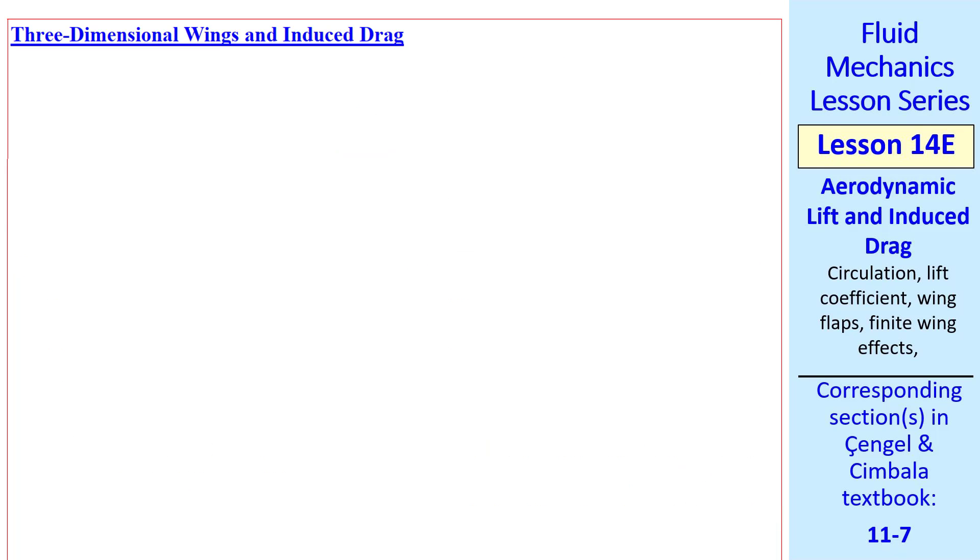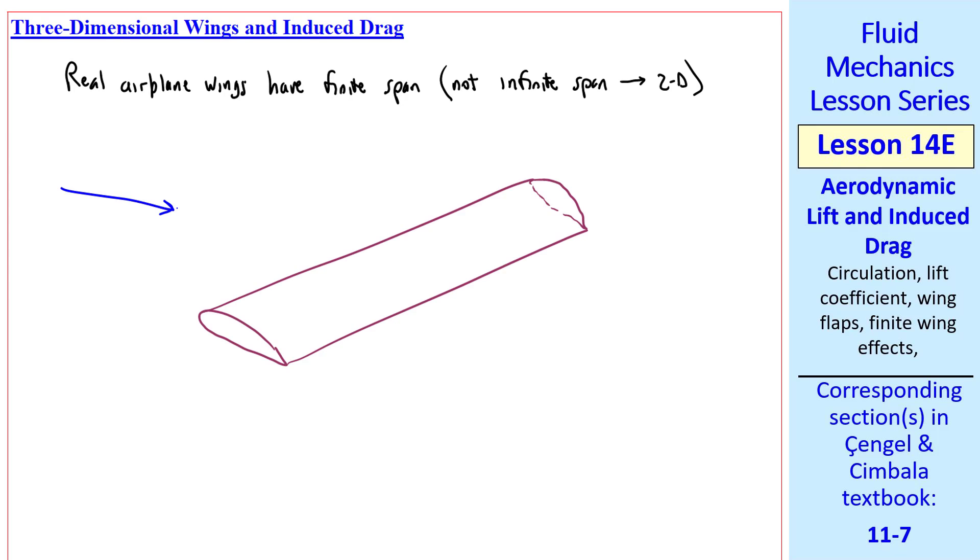Now let's talk about three-dimensional wings and something called induced drag. Real airplane wings have finite span, not an infinite span as you would have in a 2D airfoil. Here I attempt to draw a finite span wing at some moderate angle of attack. As we stated previously, the pressure is high on the bottom surface and low on the top surface. When a wing is chopped off like this and becomes a 3D wing, the air wants to flow from high pressure to low pressure. So it forms a vortex that trails off the tip of the airfoil. The same thing happens on the other side, but the rotation is opposite.